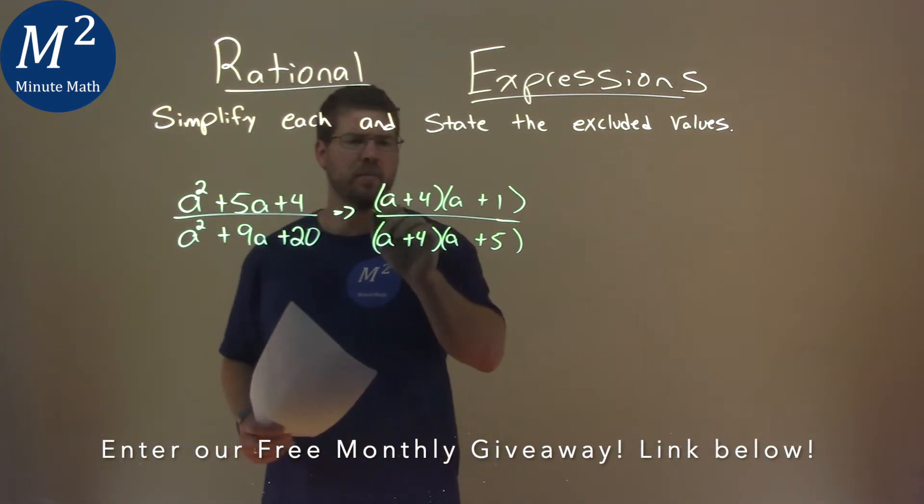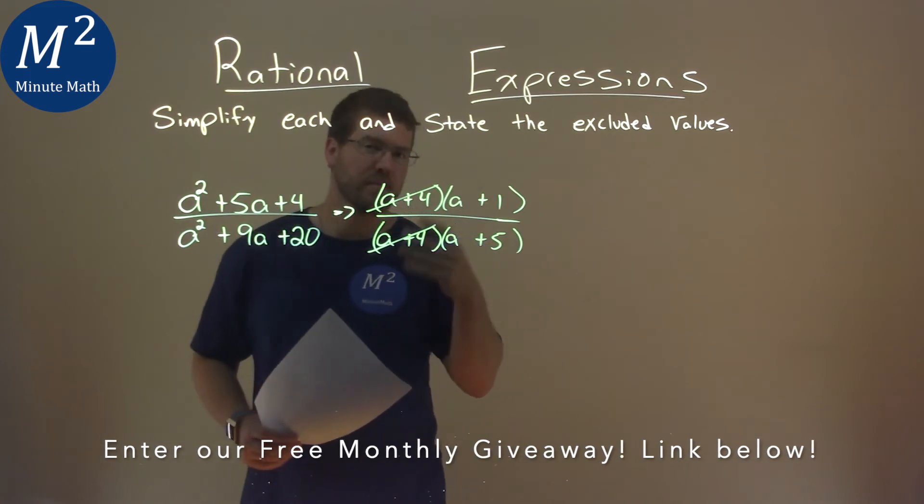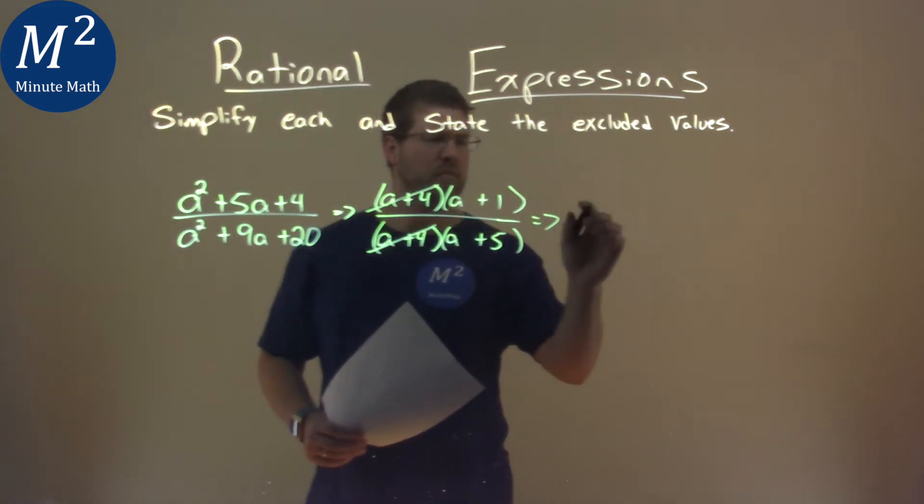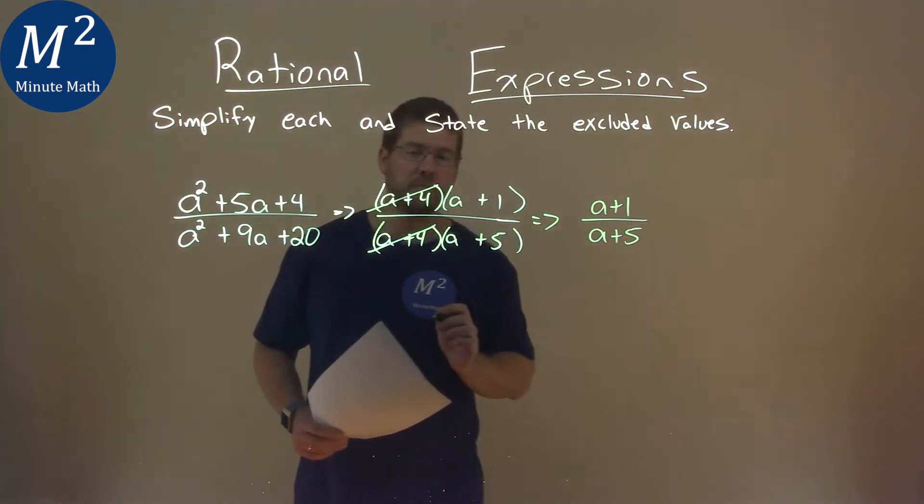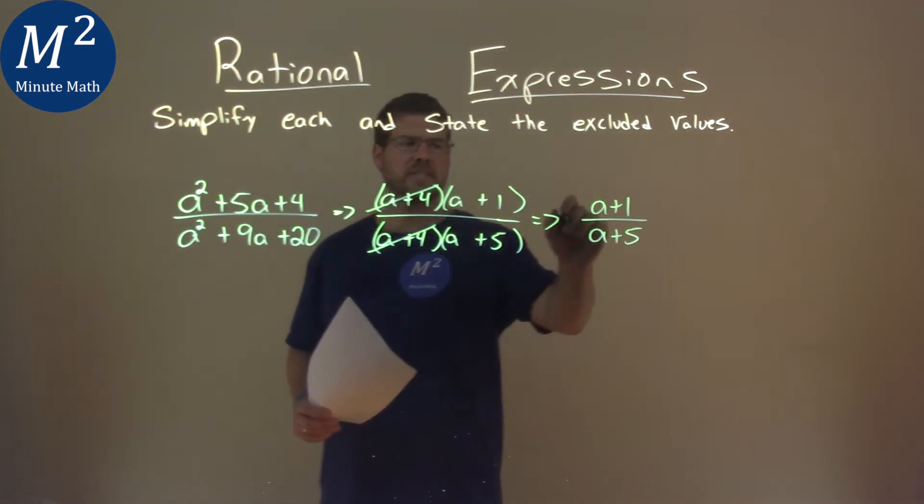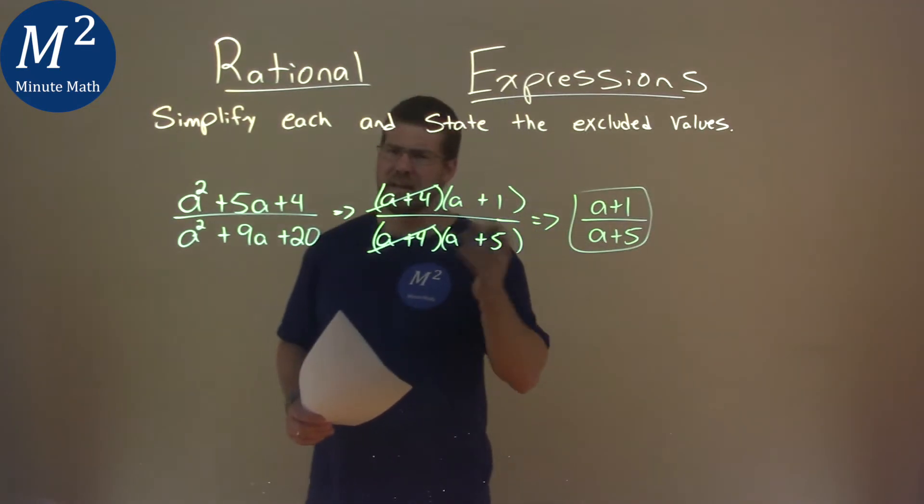Luckily for us, we see (a plus 4) over (a plus 4). That cancels out. So we're left with (a plus 1) over (a plus 5). That's our simplified answer. Can't simplify anymore.